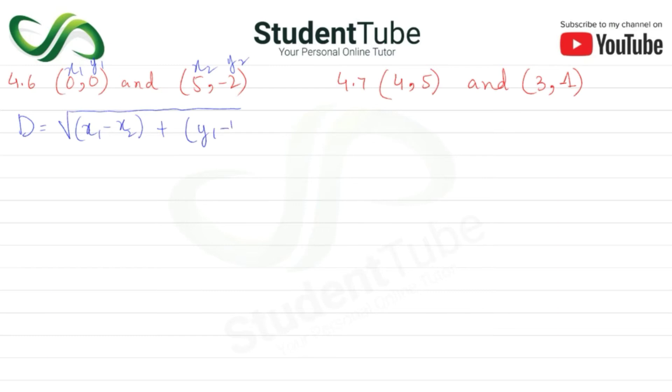We know x₁: the first value is x₁ and the second value is y₁. Then the second bracket: first value is x₂ and second value is y₂.